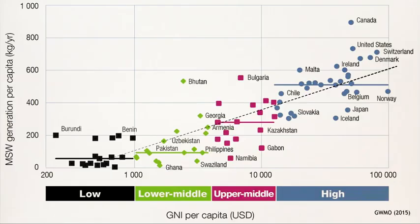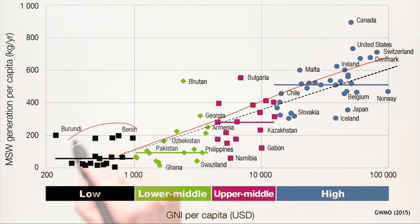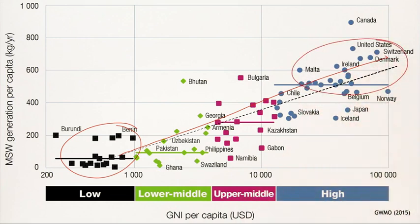On waste generation, let's look at this graph from the Global Waste Management Outlook. What we see here is waste generation per capita per year, and on the x-axis we see gross national income per capita. What is clearly visible is that with increasing income, we have increasing waste generation rates. Poor countries generate less waste; rich countries generate more waste.